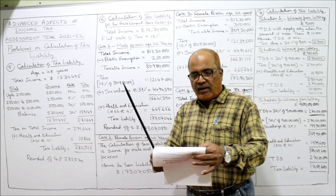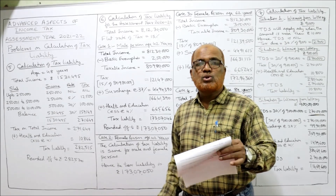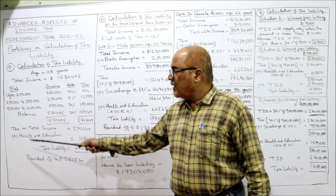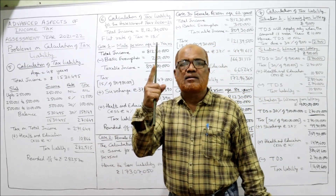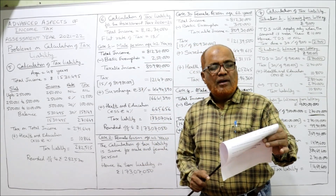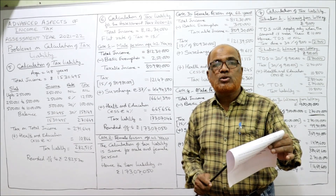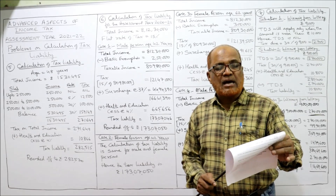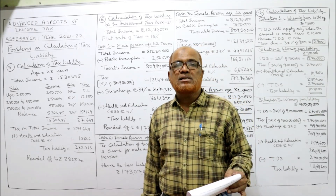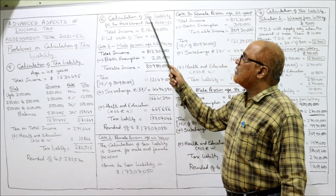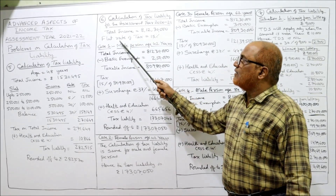Now Problem Number Six: total income is taxable at a flat rate. So far we applied slab rates, but in this sixth problem we have a single flat rate — fifteen percent. The income is eight crore twelve lakh thirty thousand. Determine the tax liability in the following four situations. Calculation of tax liability for assessment year 2021-22: total income is eight crore twelve lakh thirty thousand, flat rate of tax is fifteen percent.